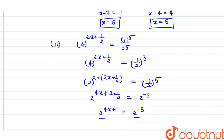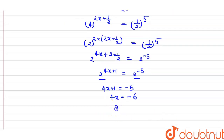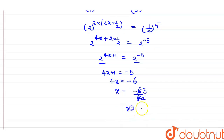Since the base is the same, we compare the powers: 4x plus 1 equals minus 5, so 4x equals minus 6. Therefore x equals minus 6 over 4, which simplifies to minus 3 over 2. The final value of x is minus 3 by 2.